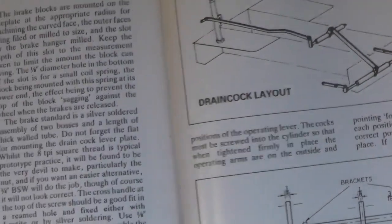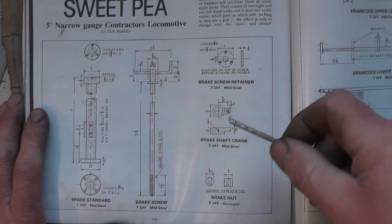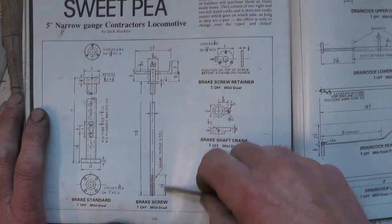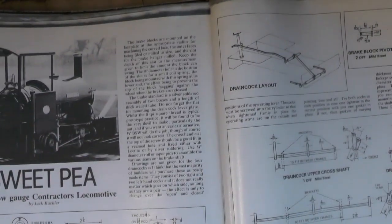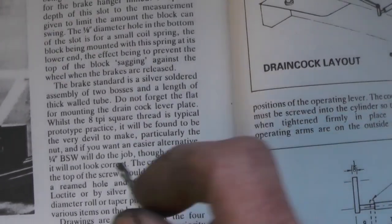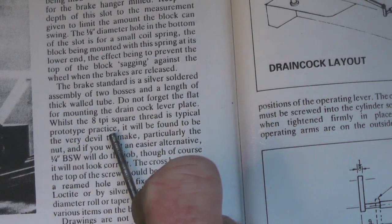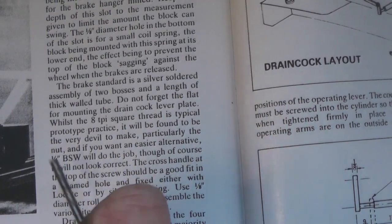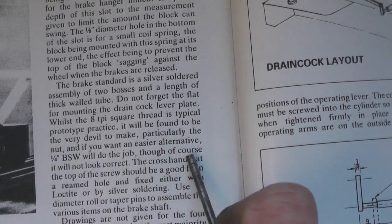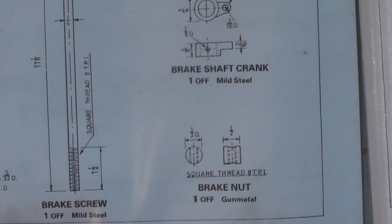The tricky components are the brake screw and the brake nut. The reason they're tricky is because if you're going to do it the correct way, they've got a square thread on. Now the brake screw's not a problem because that's an external thread. But in the write-up here it says it's an 8 threads per inch square thread, which is typical prototype practice, and it'll be found a very devil to make, particularly the nut. So if you want to make it easier, an alternative would be to do it quarter BSW. It will do the job, but of course it will not look correct. So I thought I'd have a go at doing it the hard way.